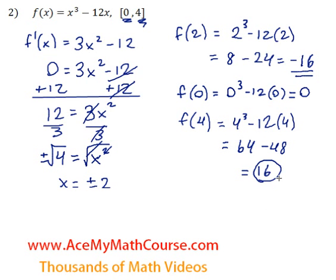So 16 is the highest value, that's the absolute maximum. Negative 16 is the lowest, so that's the absolute minimum.